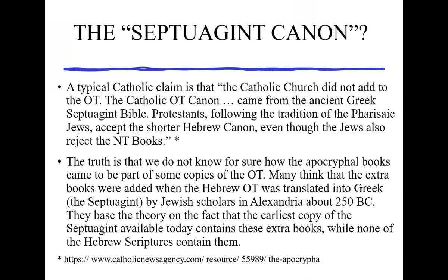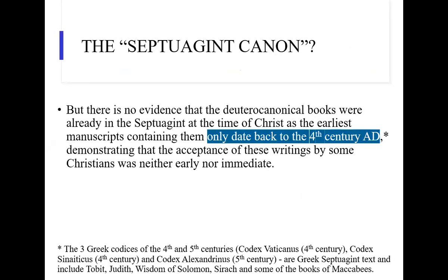Some people will try to appeal to the Septuagint — a Greek translation of the Old Testament made about 200 to 300 years before Jesus. Most of the New Testament quotes we'll see in the next lecture actually come from the Septuagint, since most people in the time of Jesus spoke Greek. The earliest copies of the Septuagint often have some apocryphal books in them, and Catholics and Orthodox point to that as evidence. But the earliest copy of the Septuagint we have dates back to the fourth century after Christ, so we don't know whether they contained those books earlier on — it's not a valid argument.